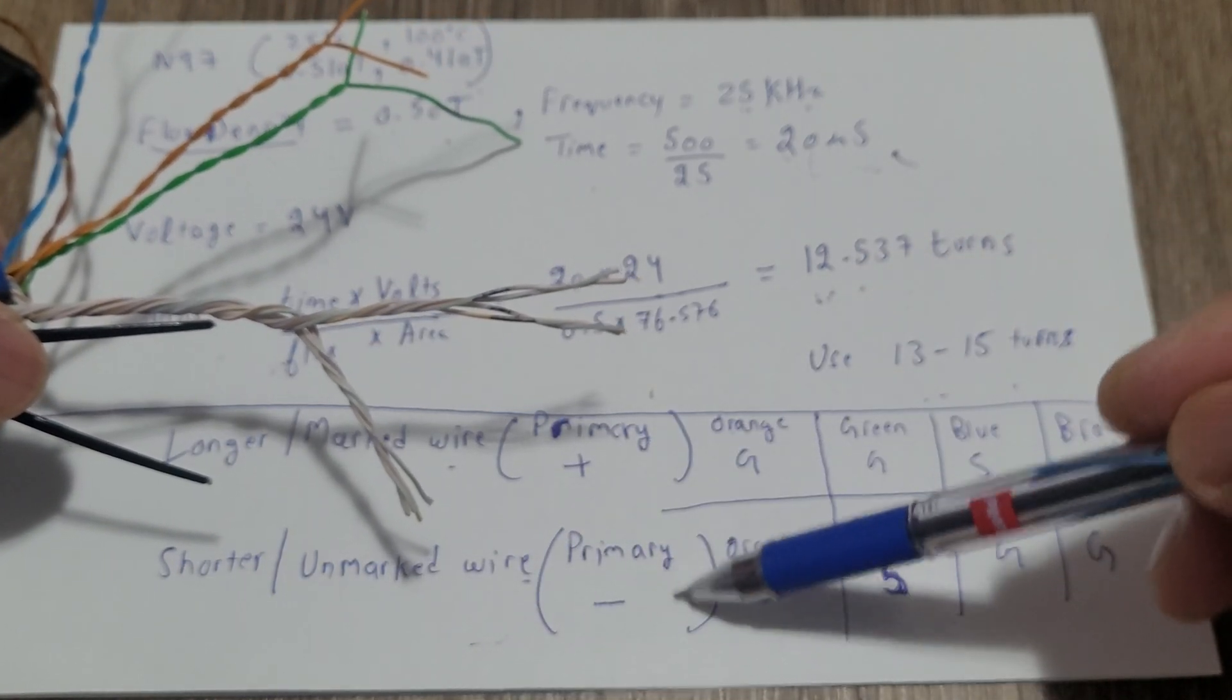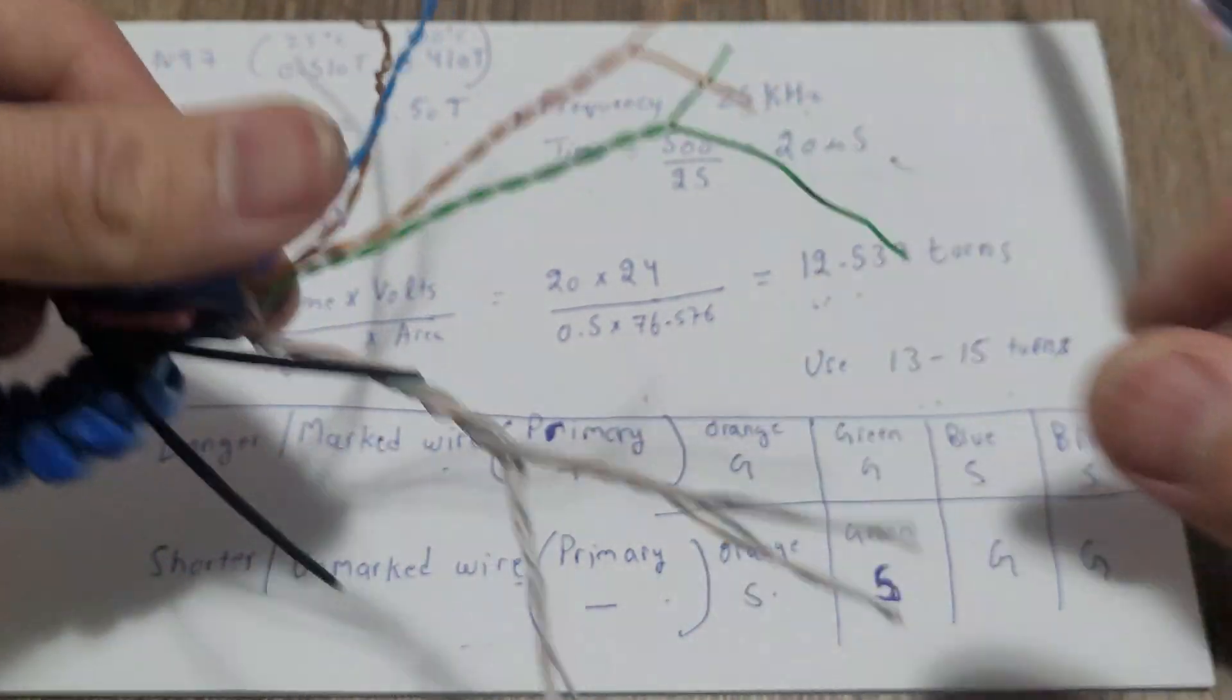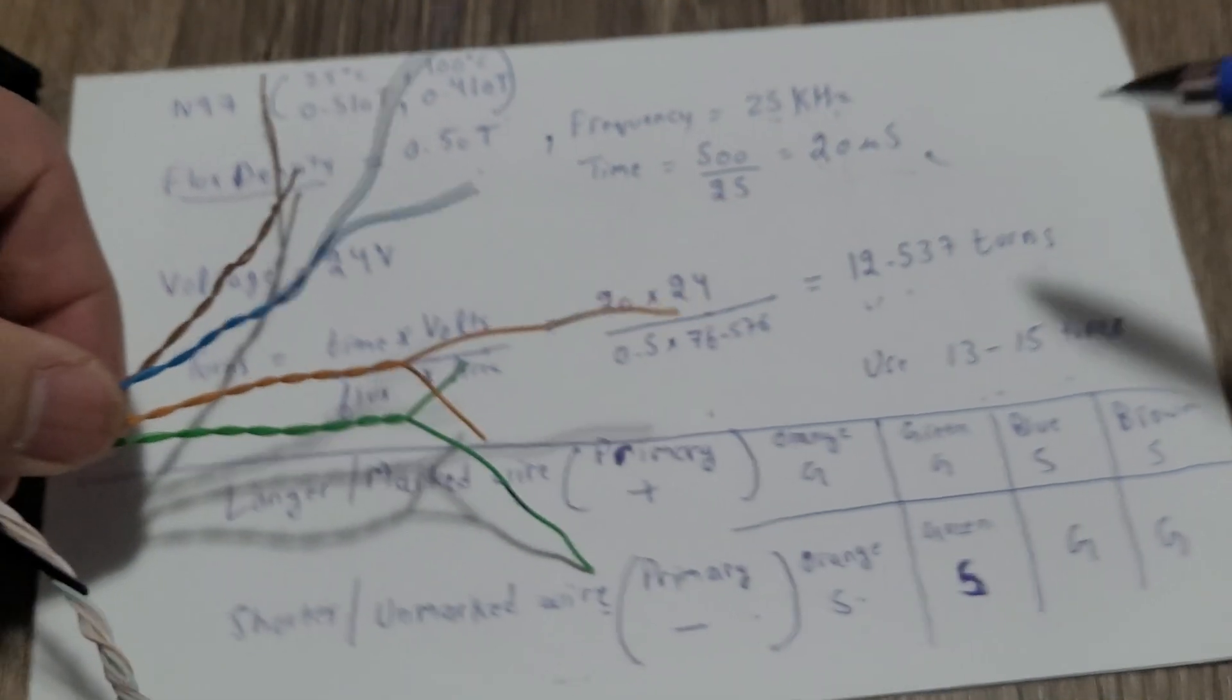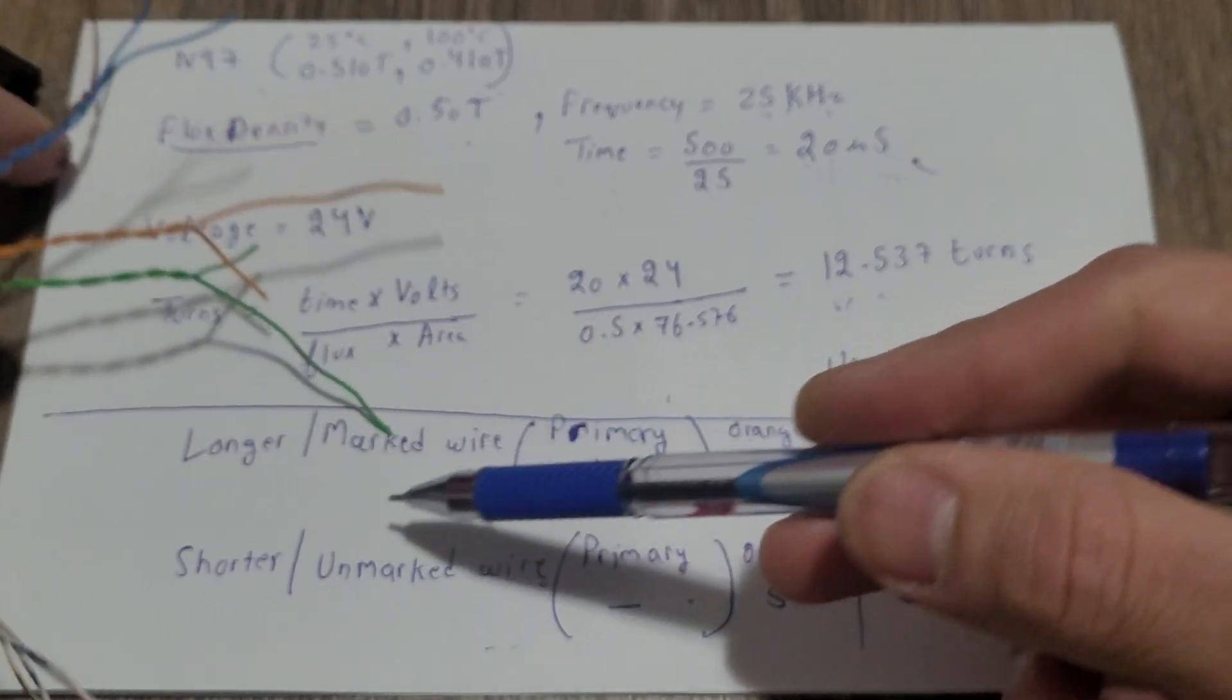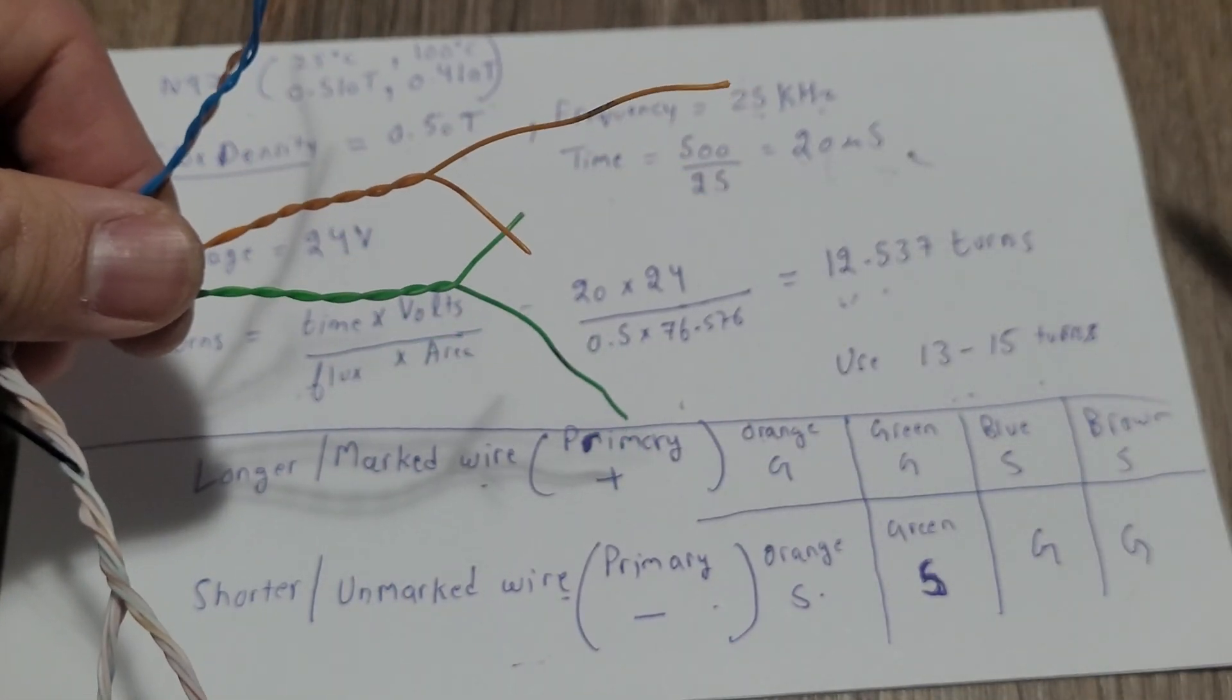This is the primary. And for orange, longer slash marked wire will be the gate, this one.